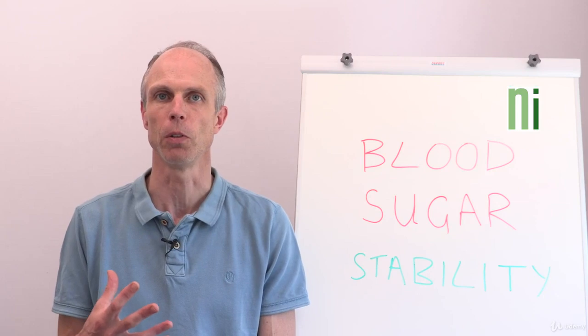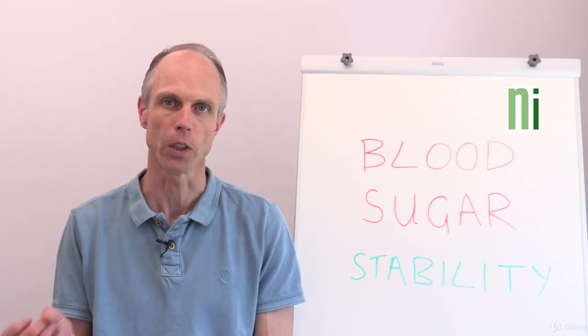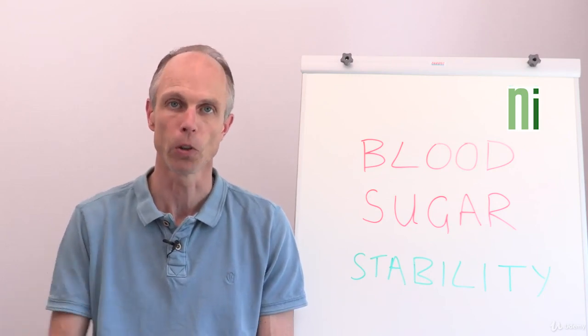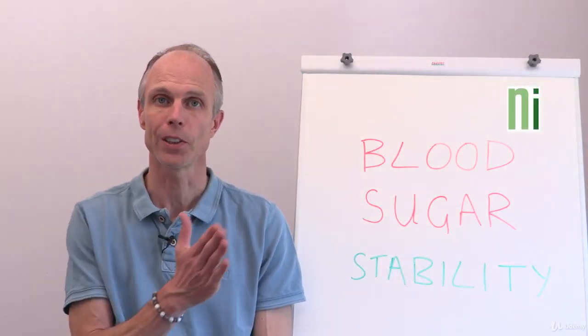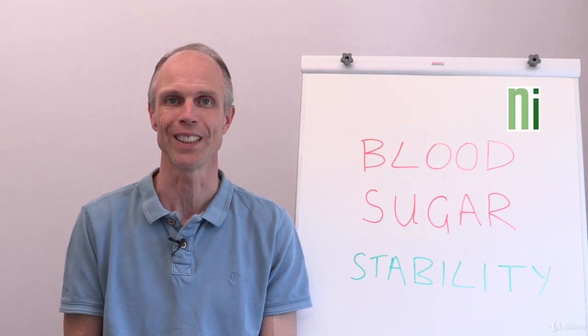Type 1 diabetes is more of an autoimmune disorder, so it's a little bit different, and we'll focus on type 2 diabetes. En route to type 2 diabetes, the first step is called insulin resistance.